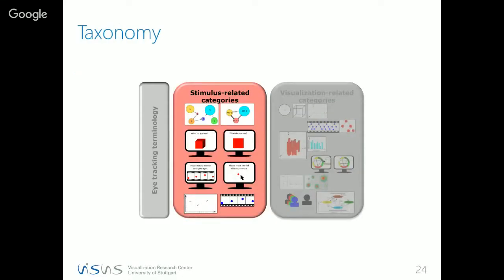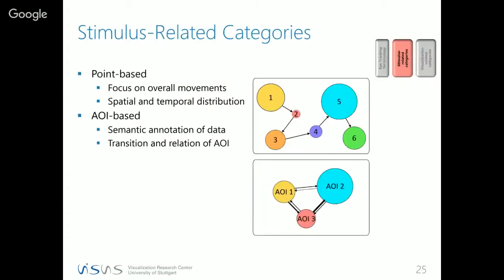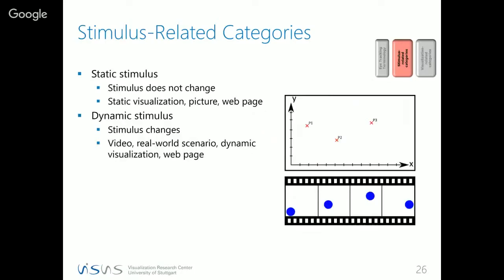With that information I come to the actual taxonomy, starting with the stimulus-related categories. We distinguish between techniques that work on point-based data representation versus those that work on an area-of-interest-based data representation. If we have point-based data, we focus on the overall movement of gaze points and their spatial and temporal distribution. If we are focused on areas of interest, we typically use semantic annotation to add additional information about the underlying stimulus and look into transitions between AOIs and their relationships.